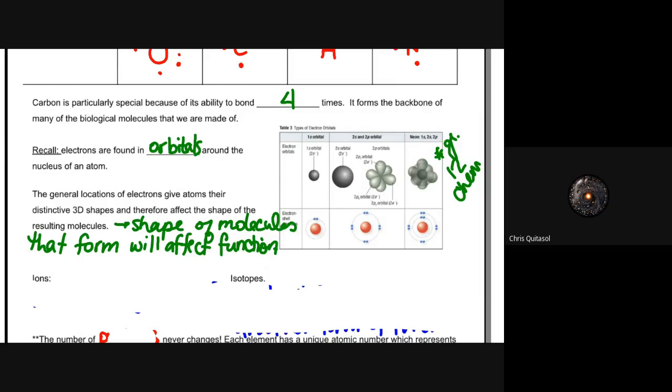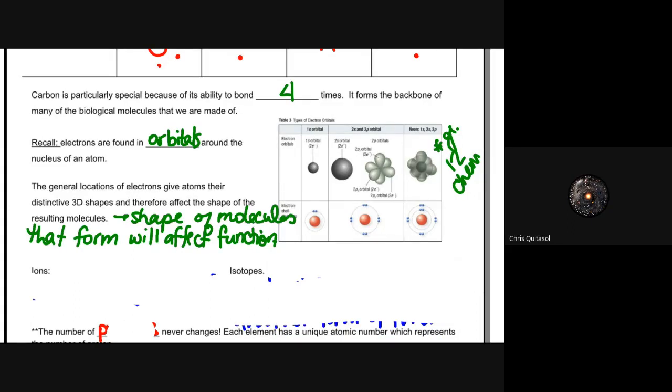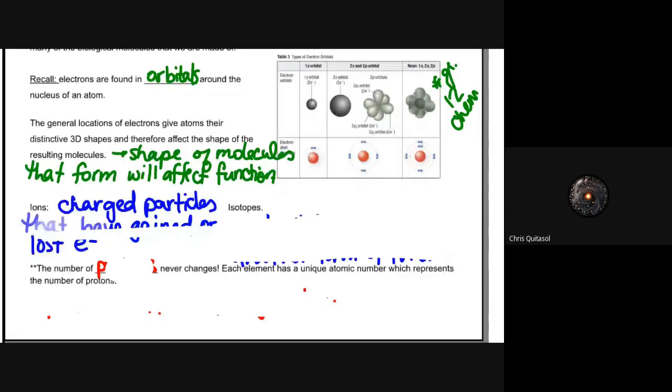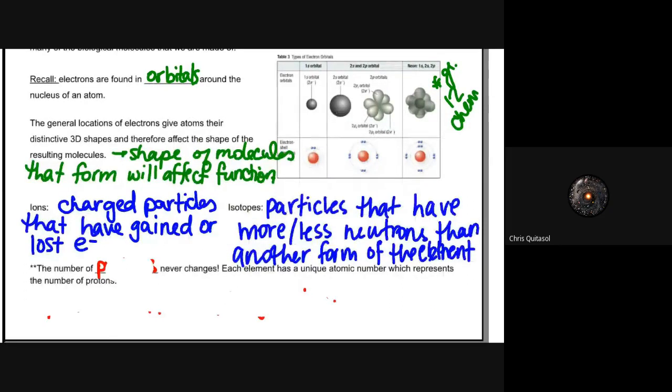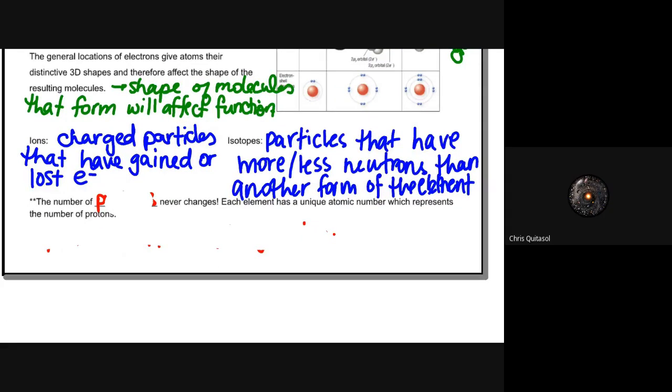So we have ions, which are charged particles. We have isotopes, which have more or less neutrons than another form of that same element. This should just be reviewed from grade 10 science, so I won't spend too much time on it, but you will have to have a general understanding of how they work. And then the number of protons will never change—each element has a unique atomic number which will represent the number of protons, and that's going to stay consistent.